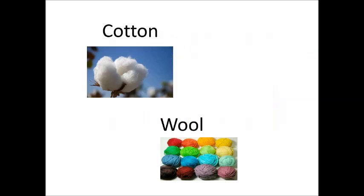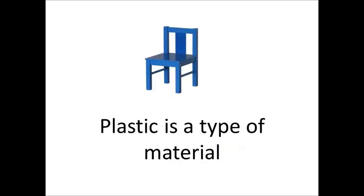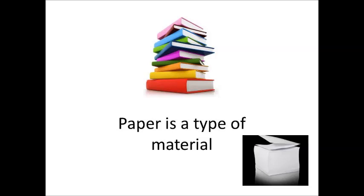We are all wearing clothes, and clothes are made of fabric. Fabrics like cotton or wool are types of materials. You are probably sitting on a chair, and the chair is made of plastic. Plastic is a type of material. Our reading books are made of paper, and paper is a type of material.